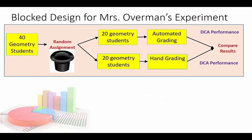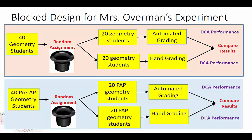For a randomized block design in my class, I could separate pre-AP geometry students and regular geometry students, because you could argue you might see a different level of response for those two groups. All the regular geometry students go in one block, randomly assigned within that block, and all the pre-AP geometry students go in another block, randomly assigned within that block, then compare results.